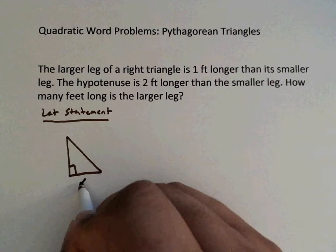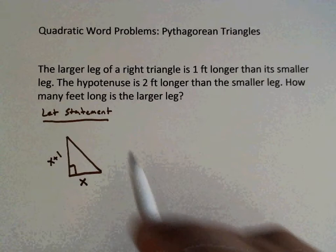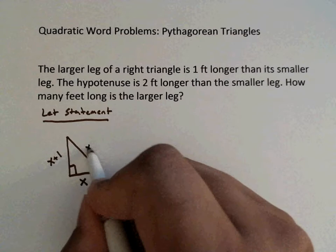My short leg, they don't tell us anything about it so I'm going to call it X. Now the larger leg of the right triangle is one foot longer than its smaller leg, so it's going to be X plus 1. The hypotenuse is two feet longer than the smaller leg, so this is X plus 2.